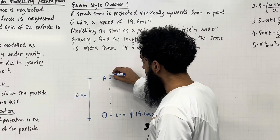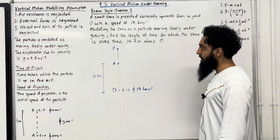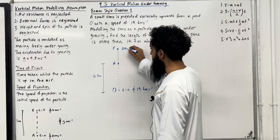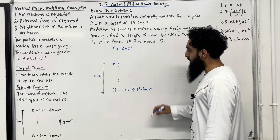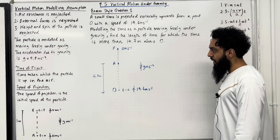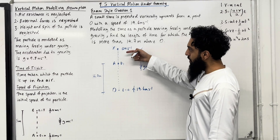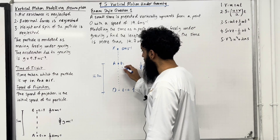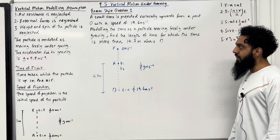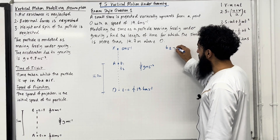The particle continues to move upwards to a point X until it reaches its maximum height above O. At maximum height, for a split second, the speed of the stone will be 0 metres per second. The acceleration due to gravity acts vertically downwards, g metres per second per second. The stone will reach A for the first time at t1, then move upwards and come back to A at a second value t2. We want to find the length of time for which the stone is more than 14.7 metres above O, which is t2 minus t1.